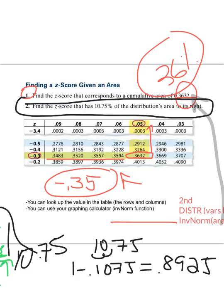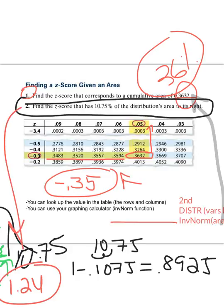Now that I know what the area is that I'm looking for, I can look it up in the table or use my graphing calculator. So I'm going to do graphing calculator, second, distribution, inverse norm, and put in my 0.8925 comma, and then my mean is zero comma, and one for the standard deviation. It looks like I have a z-score that's going to be 1.24. 1.24 would be the z-score for number 2, the z-score with 10.75% of the area to the right.